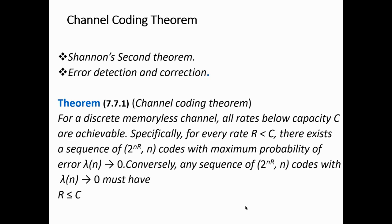To overcome errors in the channel we use channel coding. If you look at the block diagram of a digital communication system, the channel encoding is present between the source coder and the modulation. After source coding and before modulation, we perform channel coding — channel encoding — at the transmitting end. This channel encoding is used to overcome the errors that occur at the channel during transmission.